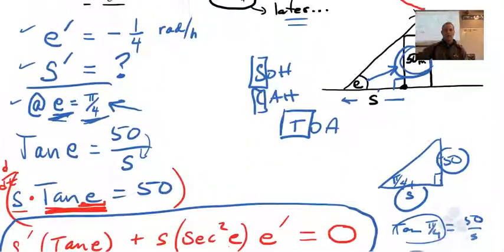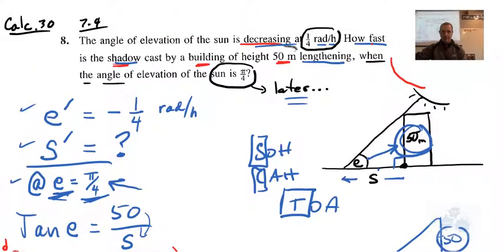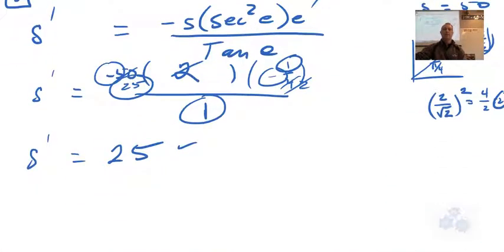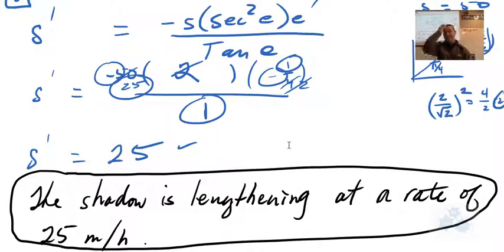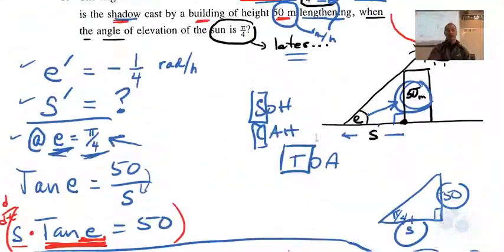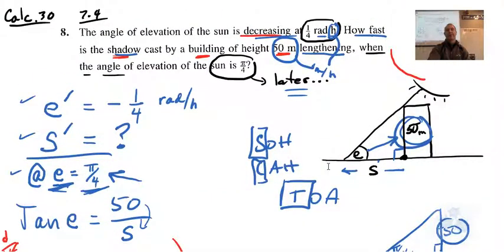So the shadow is lengthening at 25 — now what are the units? Go back and look: meters per hour. So you write your final sentence: the shadow is lengthening at a rate of 25 meters per hour. That's number eight of 7.4.